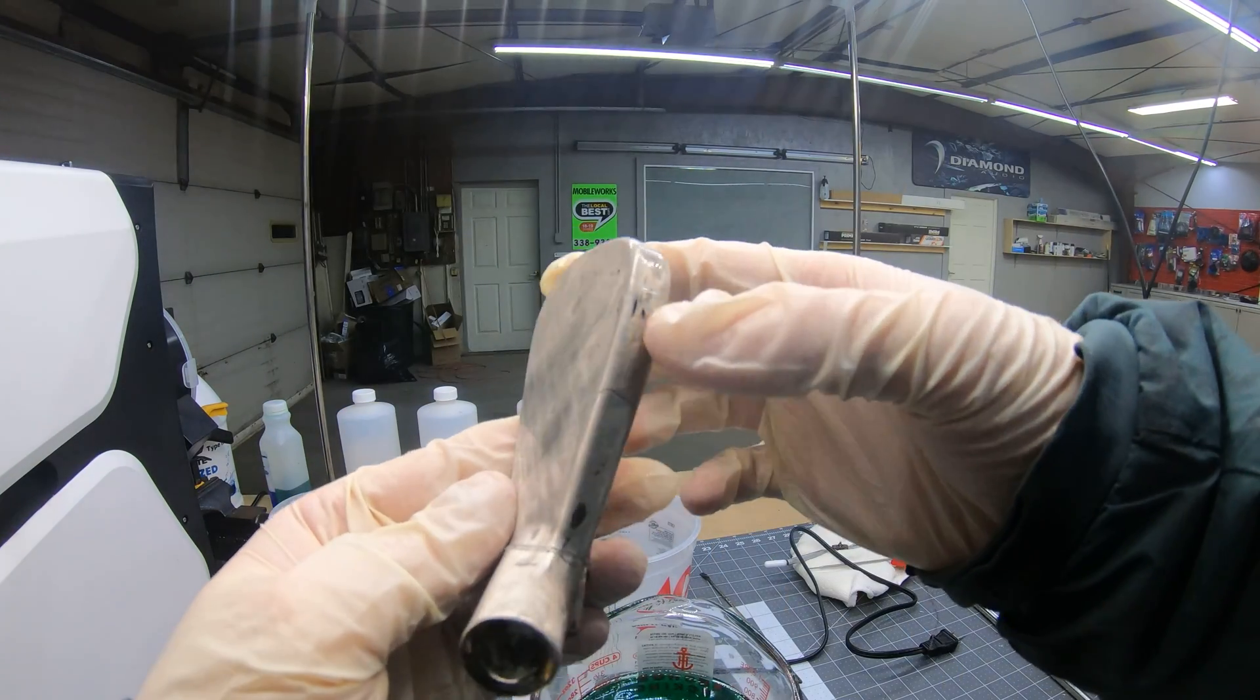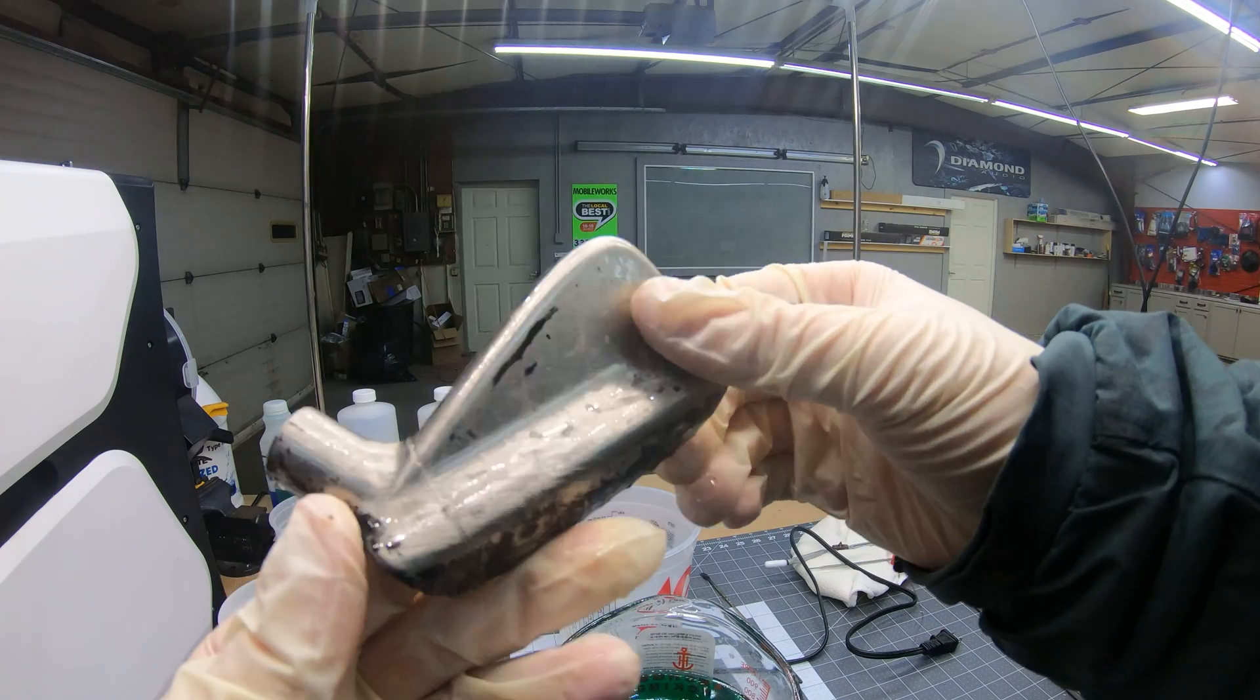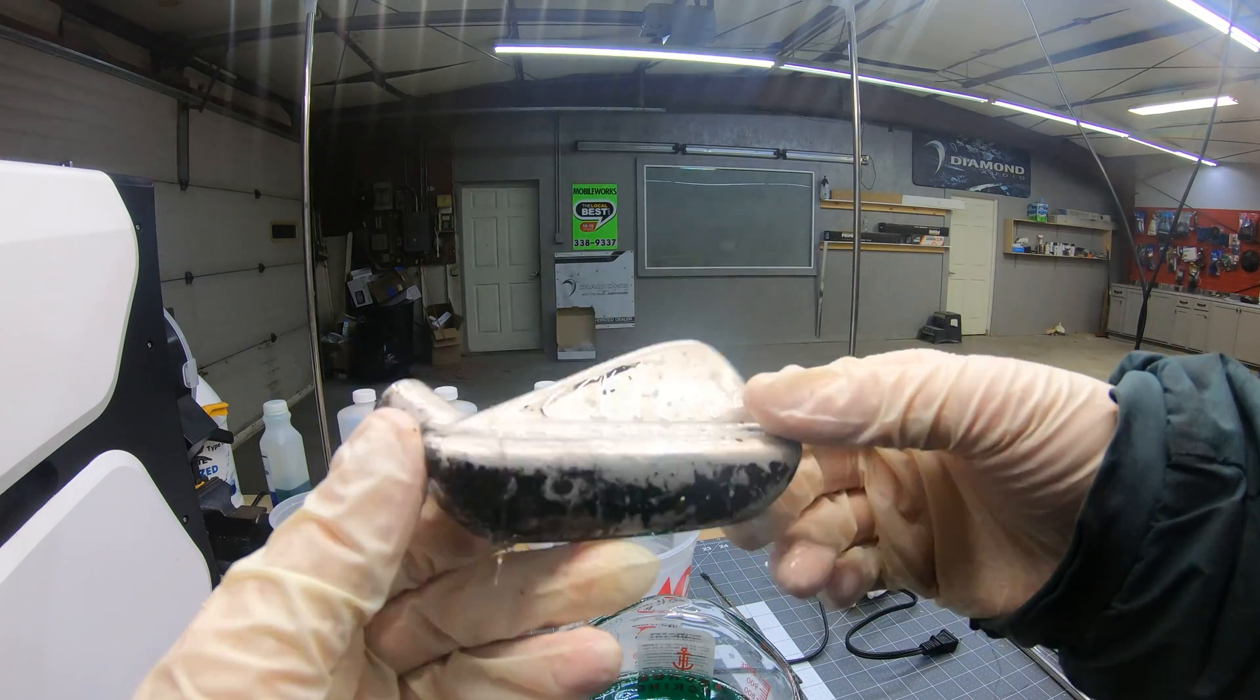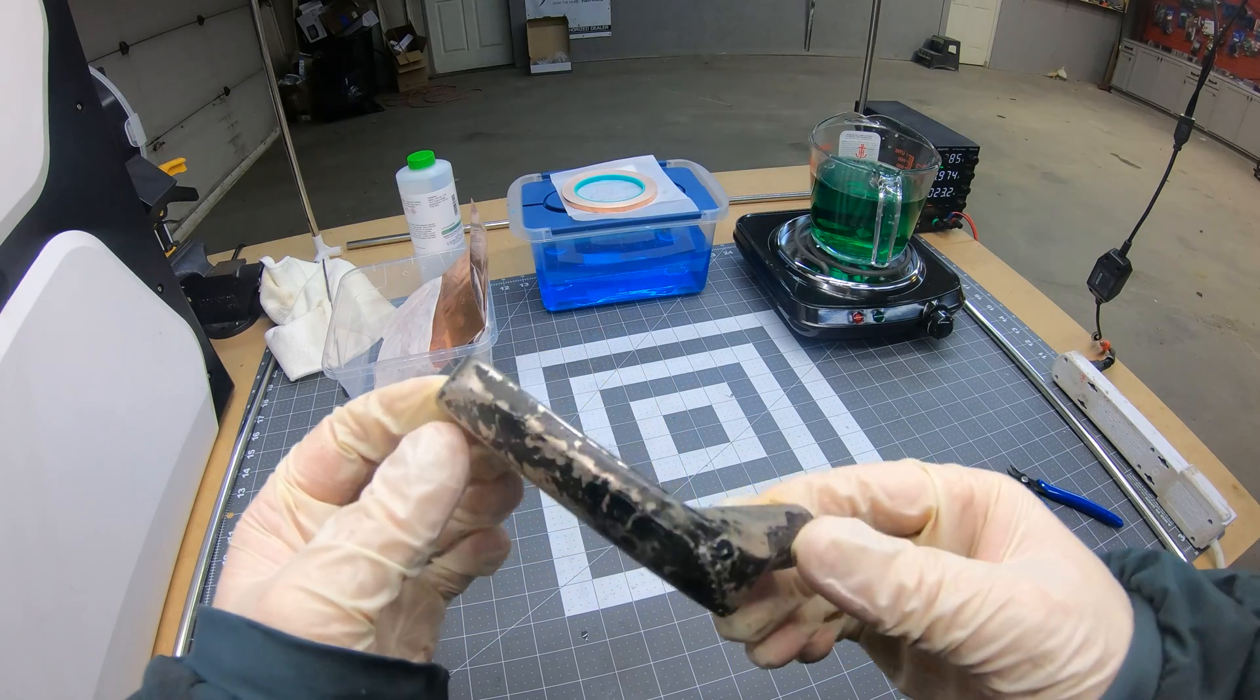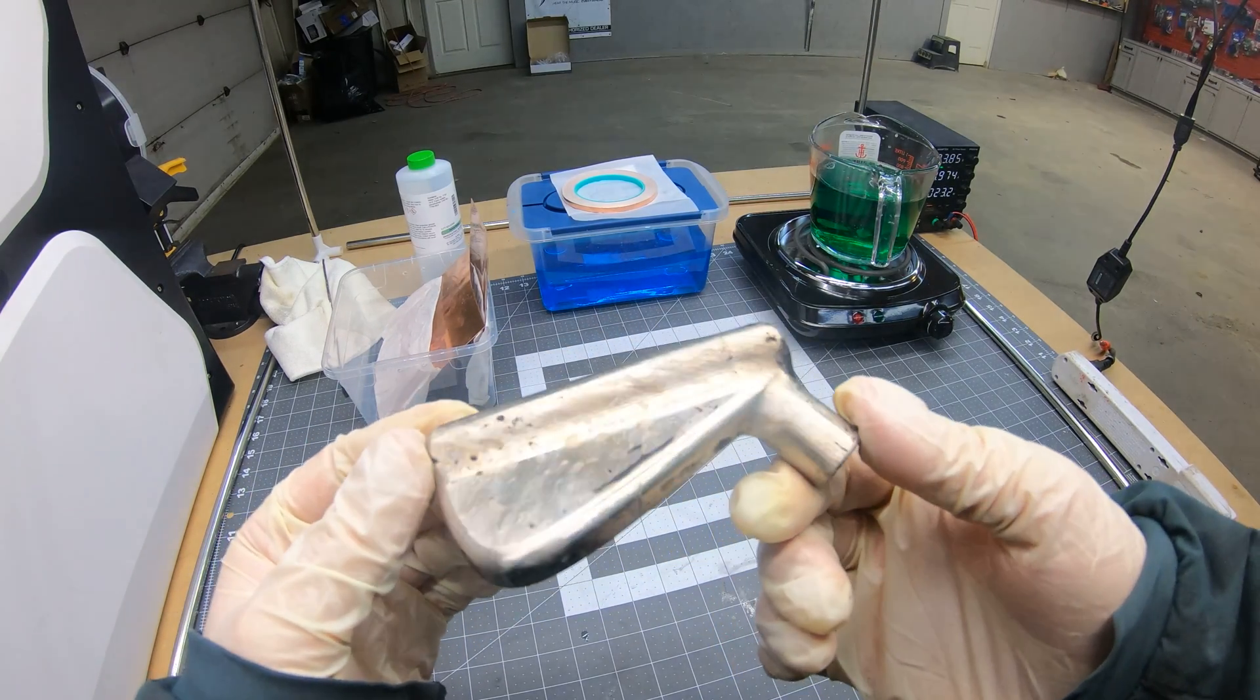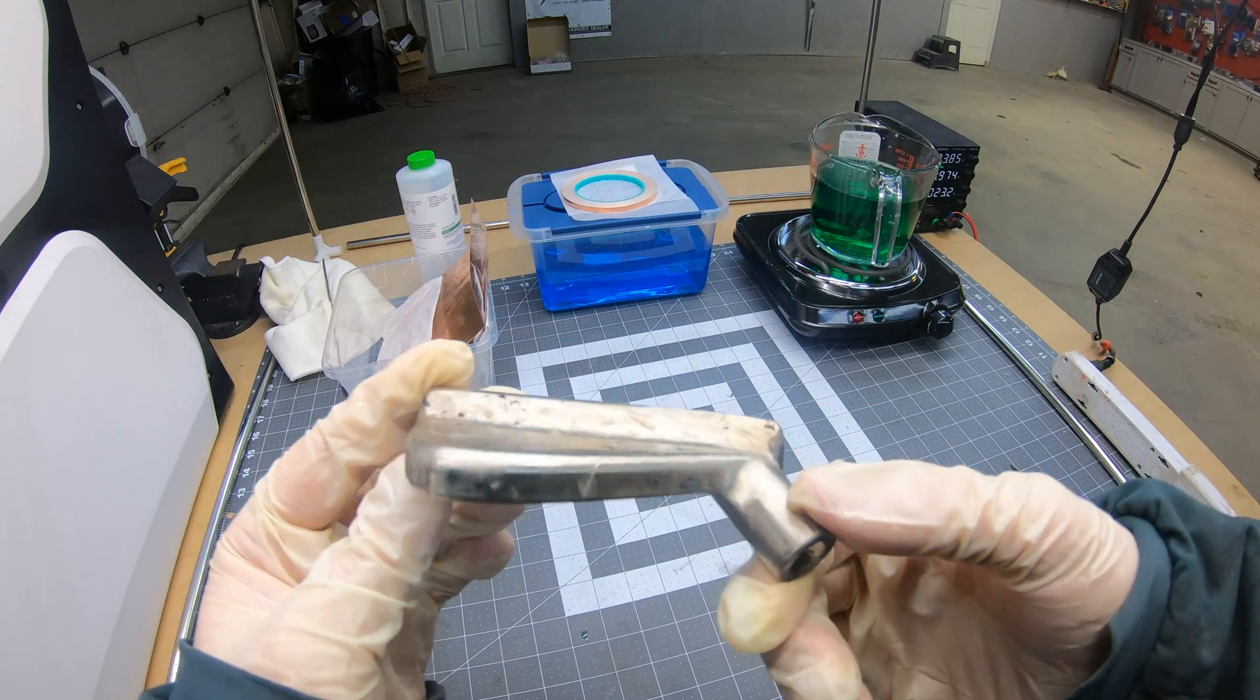So I ended up ditching the Voronoi pattern and went for a regular looking golf wedge. And honestly, this is the best finish I think I had so far. I mean, if you ignore the splotchiness on the backside, it pretty much looks like an actual golf wedge made out of metal.